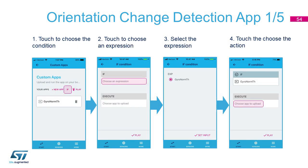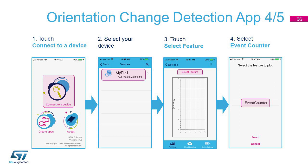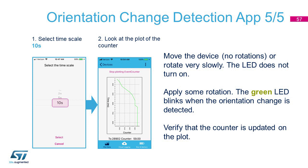Now, let's enable it as in the previous example in the IF condition, and choose as App to trigger the counter, exactly as we did in example number 4. Let's upload the app on the box and overwrite what was stored inside. By connecting to the box, we can select the event counter feature. If we are moving the box slowly or not applying any rotations, the LED will not turn on — it will instead when the device is rotated. The counter is also updated when the LED blinks.